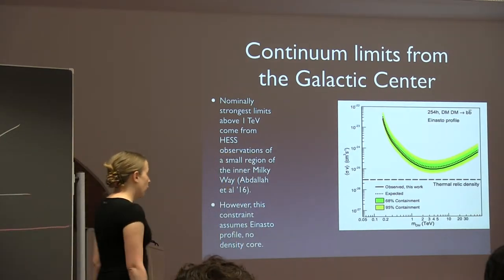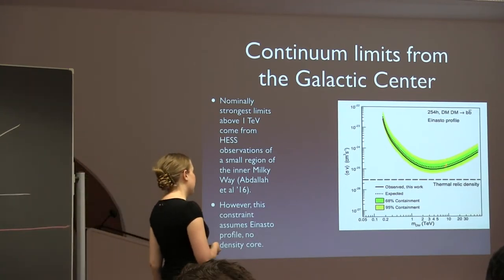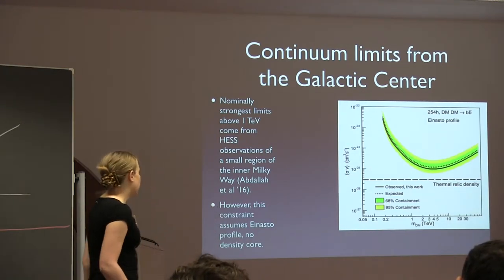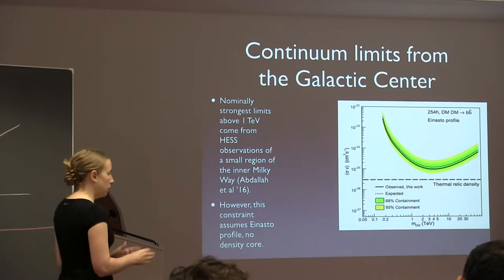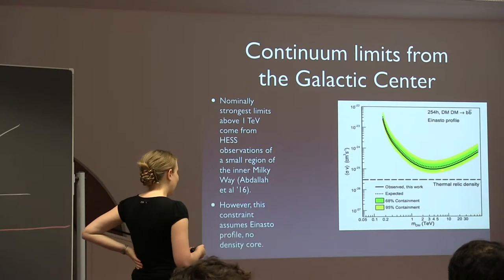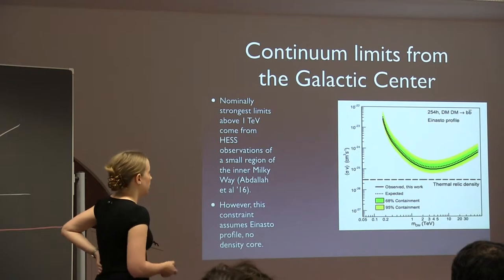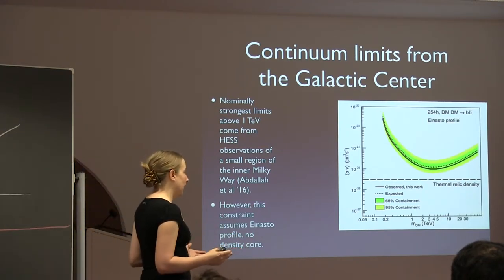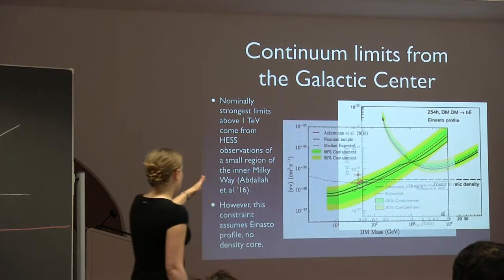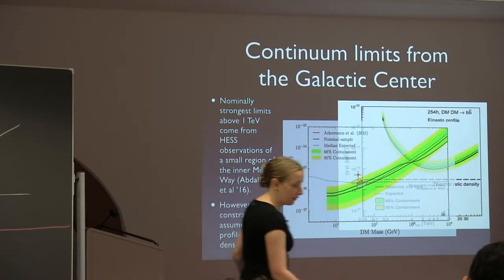Are these the strongest limits above 1 TeV? You can do better. This is an example of the limit from the galactic center using the HESS telescope assuming an Einasto profile — one of the steeply rising dark matter density profiles — covering a few degrees around the galactic center. This is a very nice limit, significantly stronger than the dwarfs in the 10^-24 to 10^-23 range above a TeV. But if the dark matter profile has a significant density core, the limit moves upward. The Fermi dwarf constraint overlaid shows HESS at the galactic center does better above about a TeV if you take it seriously.